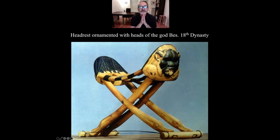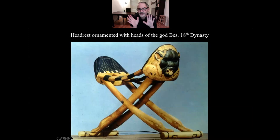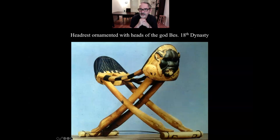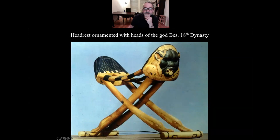This is a headrest ornamented with heads of the god Bes — 18th Dynasty. The pharaohs, their wives, or other nobility had their hair done in such a specific, rigid way — almost like a big costume helmet — that they had to sleep on these headrests so they wouldn't disturb it. There are plenty of headrests that have been found in Egyptian tombs.